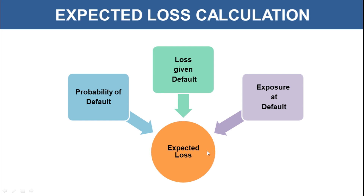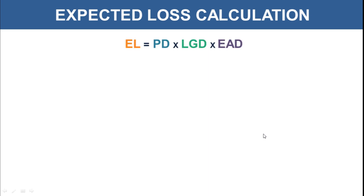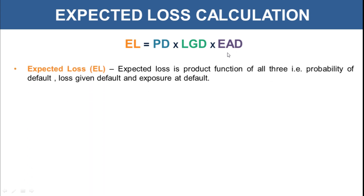Expected Loss is a product of Loss Given Default, Probability of Default, and Exposure at Default. The formula is: EL = PD × LGD × EAD, where EL is Expected Loss, PD is Probability of Default, LGD is Loss Given Default, and EAD is Exposure at Default.